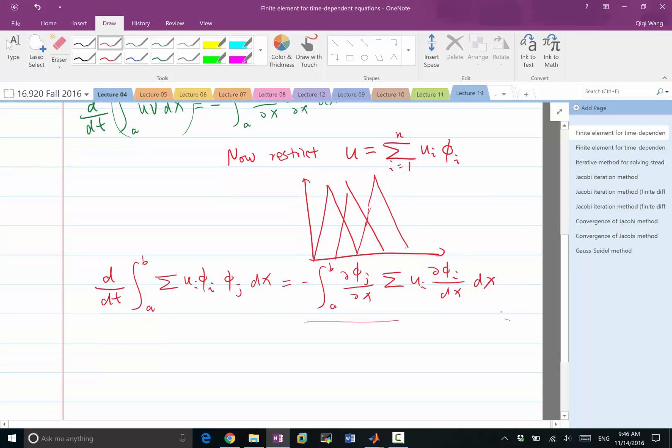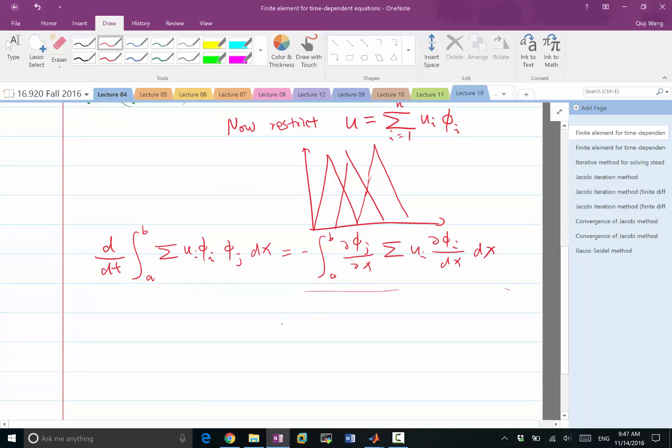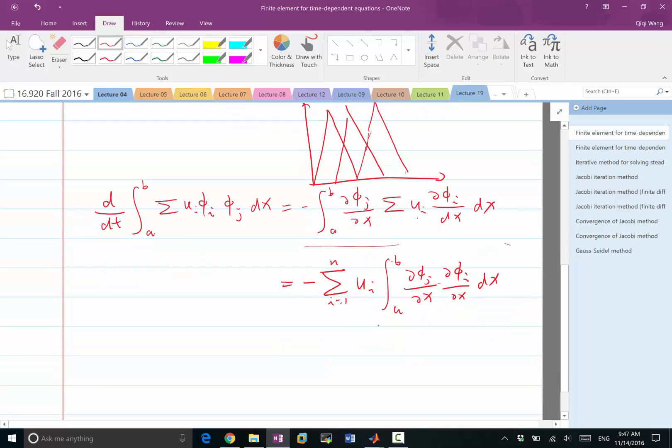The right-hand side is exactly the same as we dealt with in Poisson's equation. We pull the summation and the ui out of the integral, thereby getting summation of i goes from 1 to n, ui times the integral of derivative of phi_j times the derivative of phi_i. This is exactly the matrix we call A, and this is the j,i-th entry of the matrix A we used before to discretize the Poisson's equation.